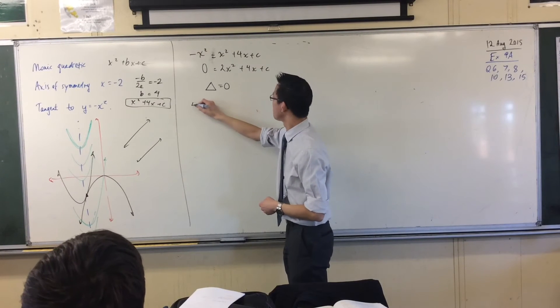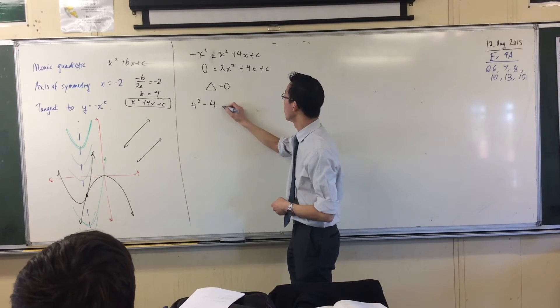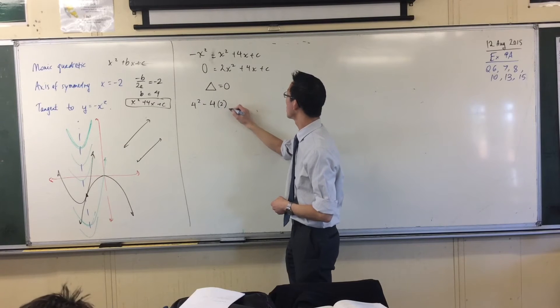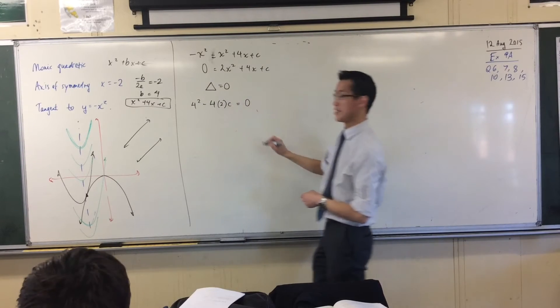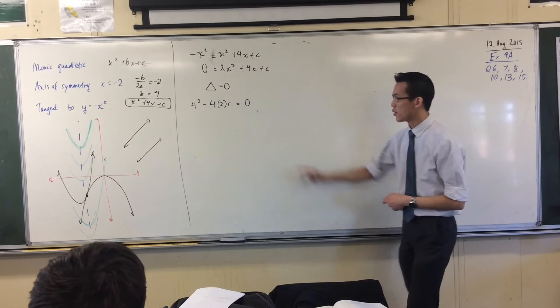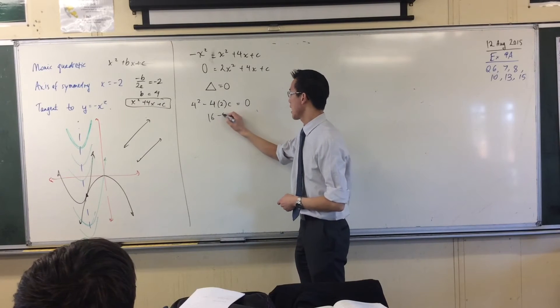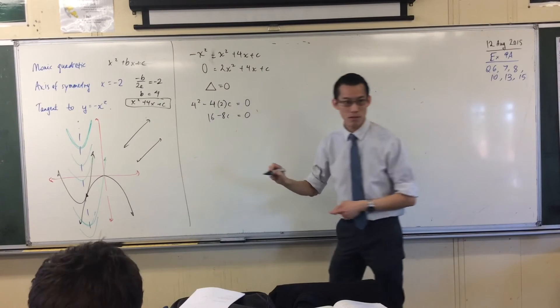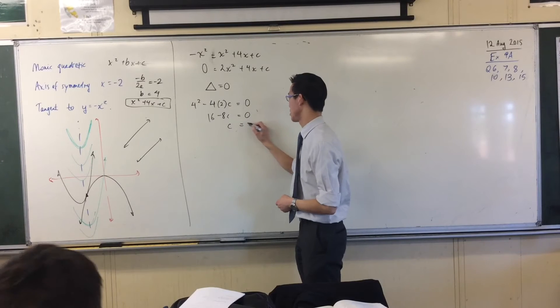B squared minus 4ac. The c is c. That's convenient. So 16 minus 8c equals zero. So c is just equal to 2.